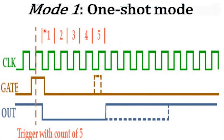In mode 1 (programmable one shot), the gate is initially held low and the output will be high. The count is loaded into the counter register, then the gate is made high. The rising edge of the gate input transfers the count from the counter register to the actual counter. The output becomes low and the countdown begins. When the terminal count is reached, the output becomes high. With count value 5, initially the gate is low and output is high; once count is loaded, countdown starts, and at terminal count the output goes high.